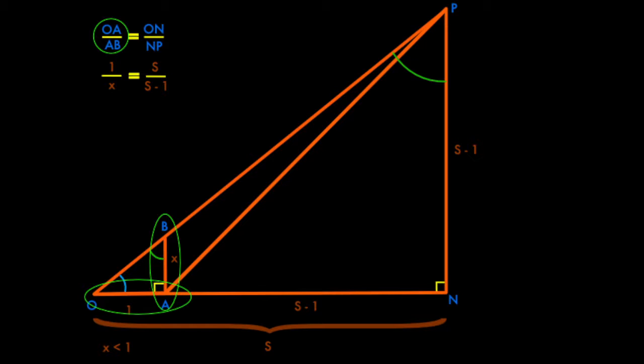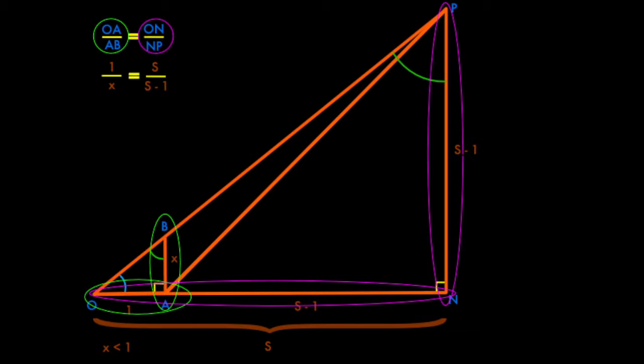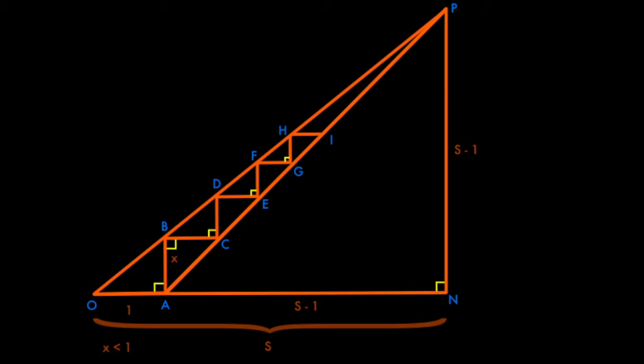So just to be explicit about that, we can see that OA over AB, circled in green, is going to be the same as ON over NP, which is circled in magenta. Okay, now that you've committed that ratio to memory, we can draw the cobweb diagram.